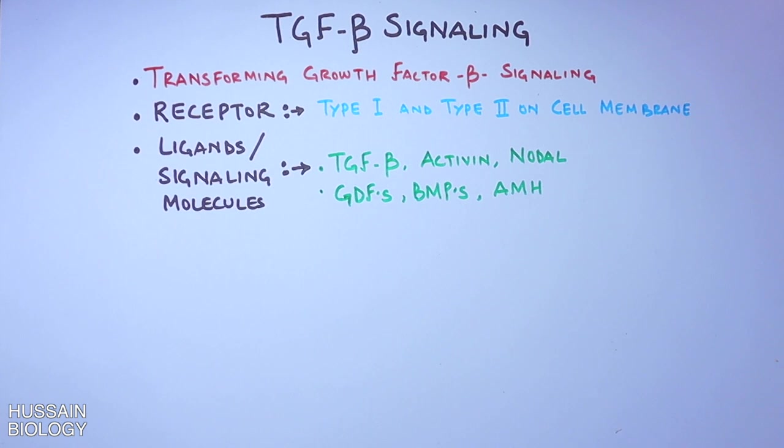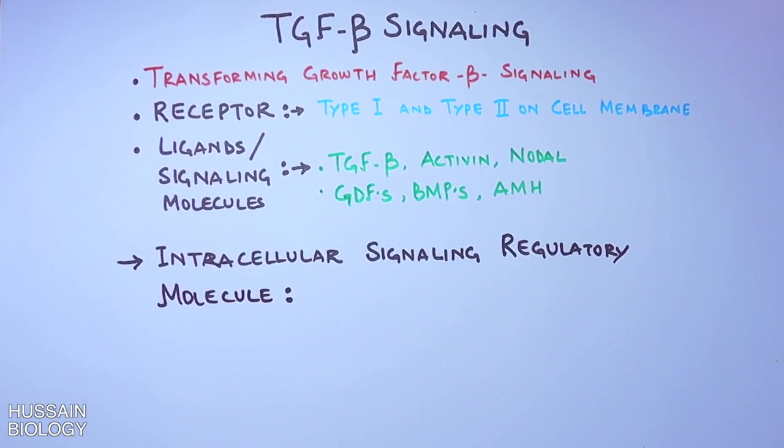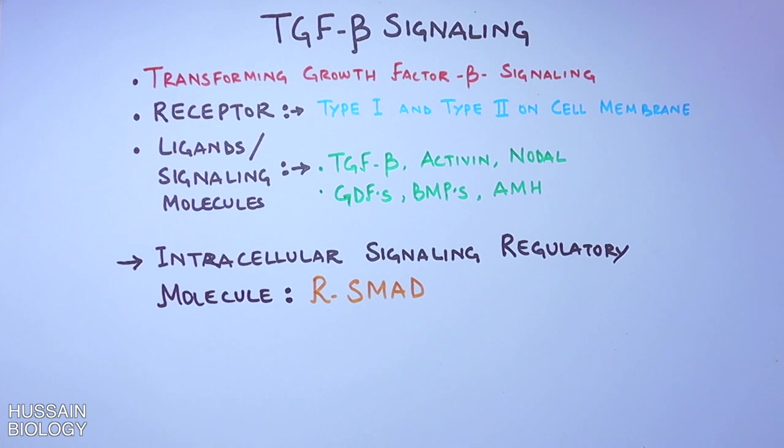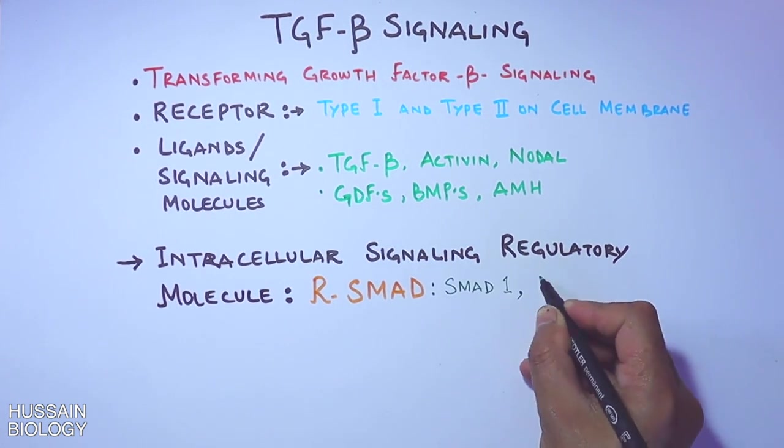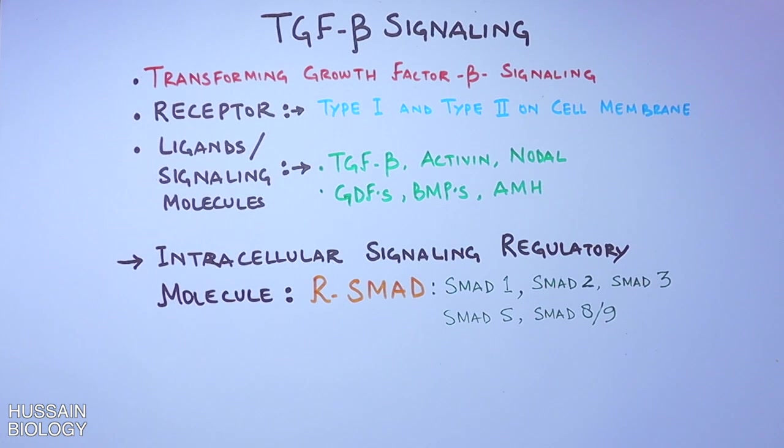When the pathway is initiated, there are intracellular signaling regulatory molecules for this TGF-beta pathway, and these are called R-SMADs or regulatory SMADs. The R-SMAD includes SMAD1, SMAD2, SMAD3, SMAD5, and SMAD8 or SMAD9.